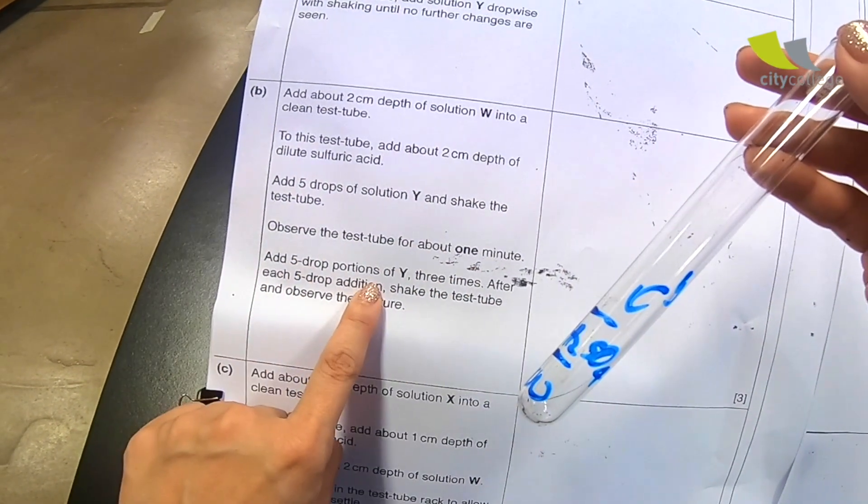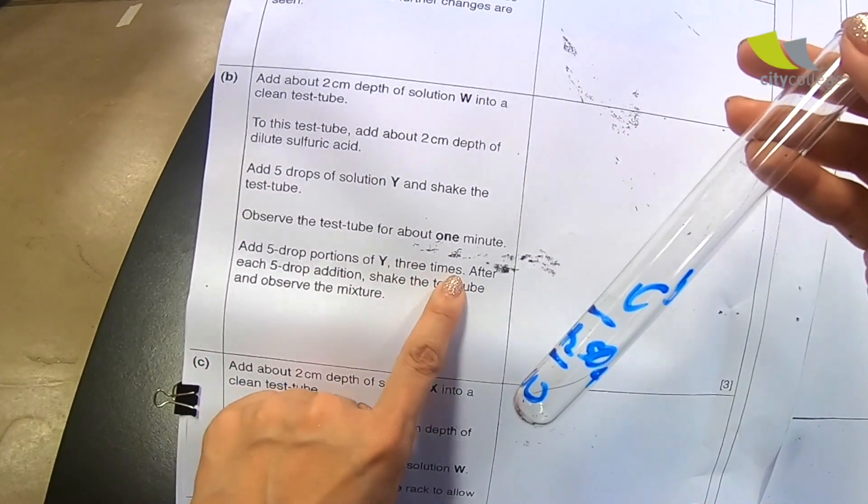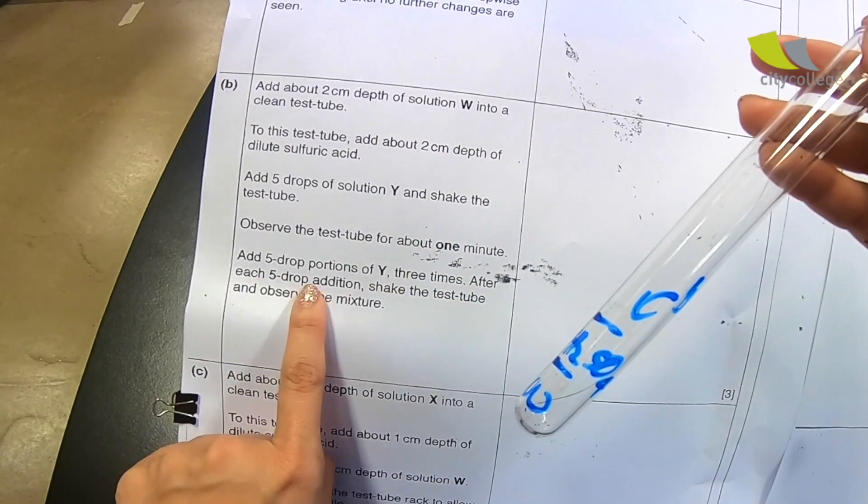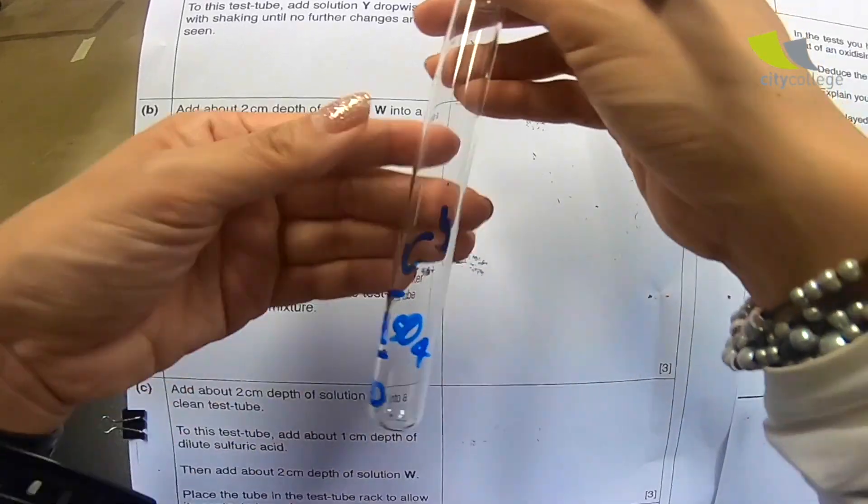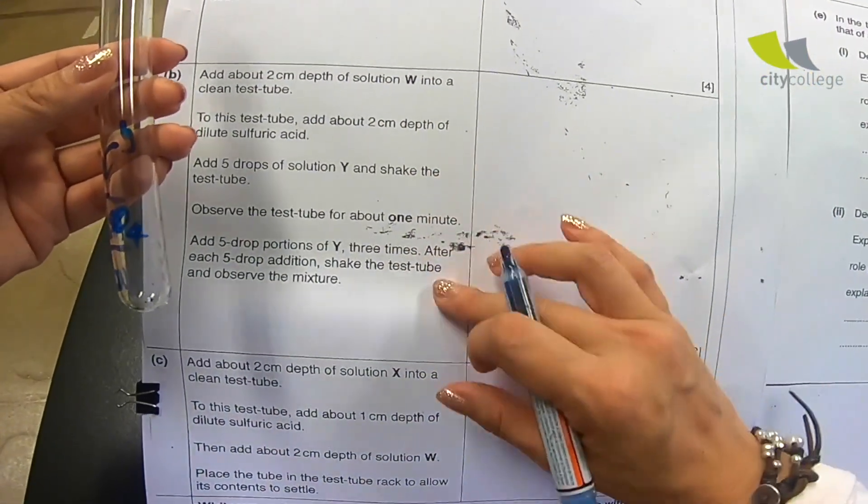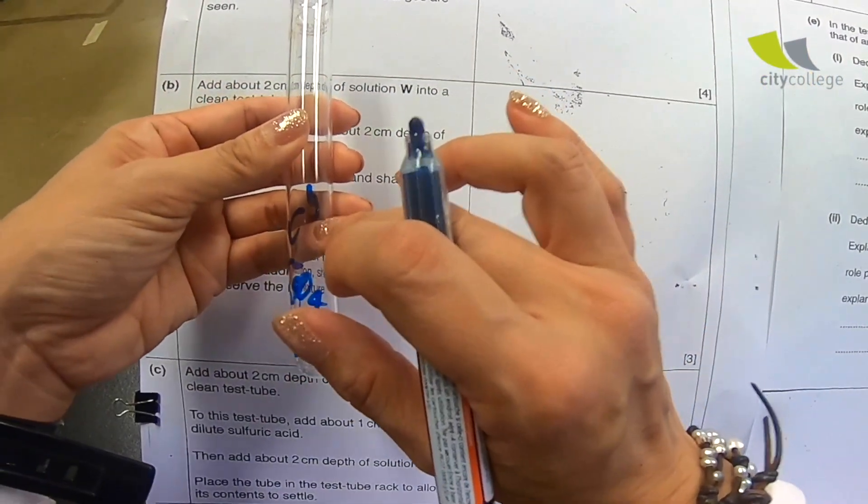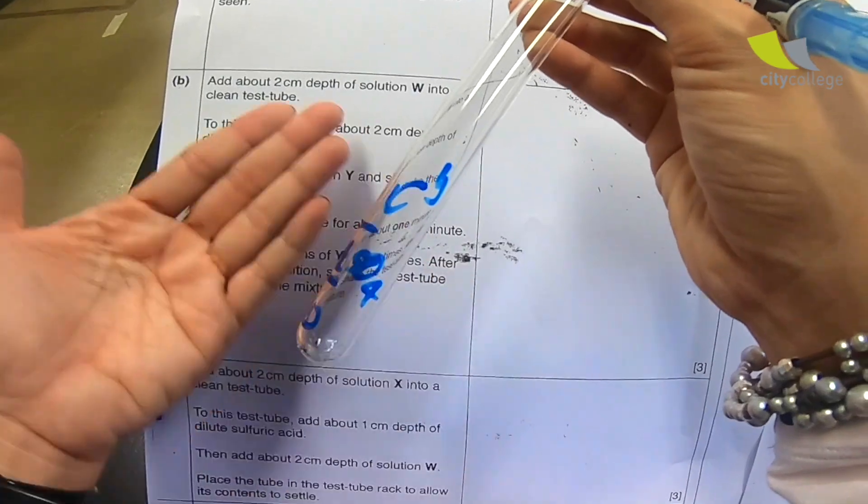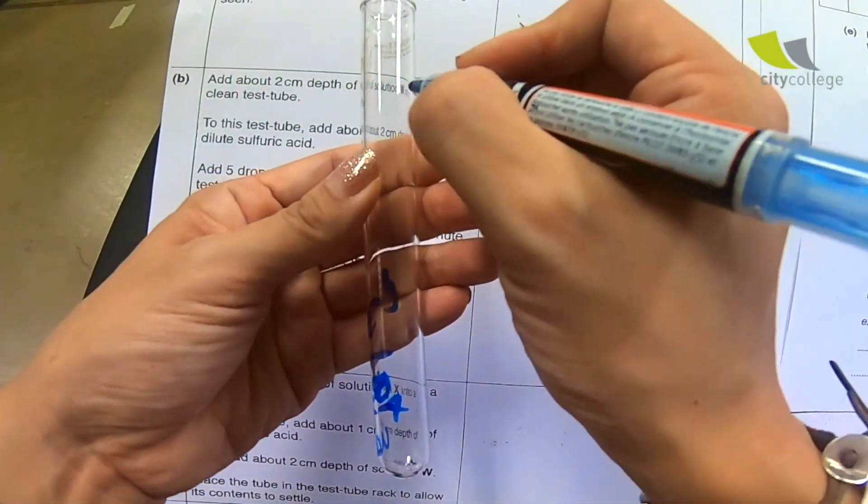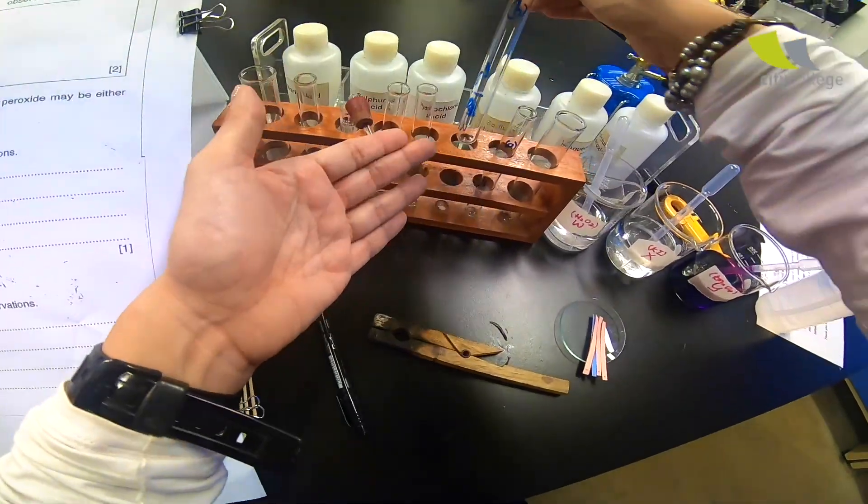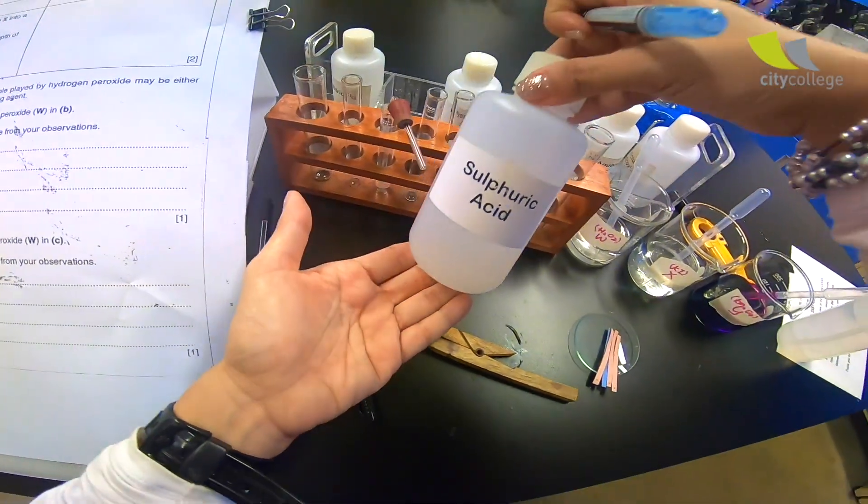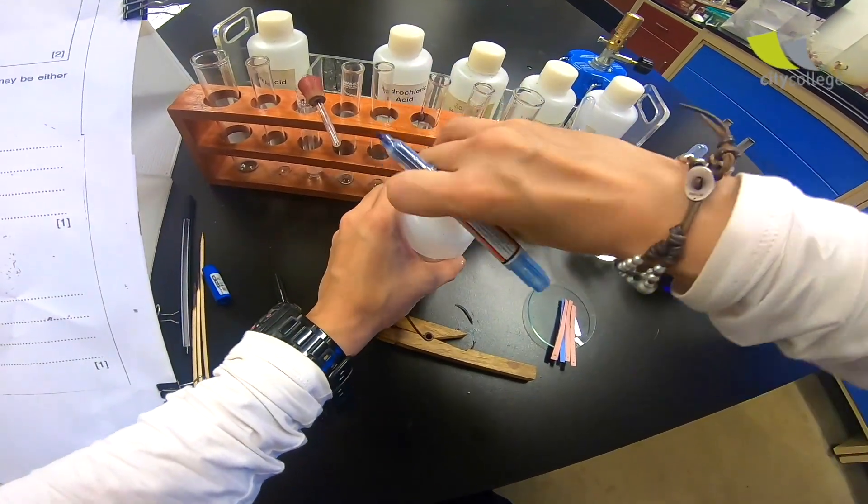And they say observe the test tube for about a minute. Add 5 drops portion of Y three times. And after each 5 drop addition, shake the test tube and observe the mixture. So, there's a lot of steps to do over here. I just write over here, add Y. Later on, I will refer to this portion and add. So this part, remember to label it as B. And because sulfuric acid is added, I make sure that I take out sulfuric acid. Put it right in front of me.